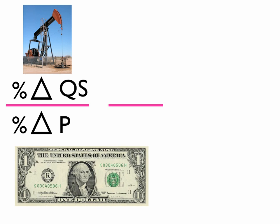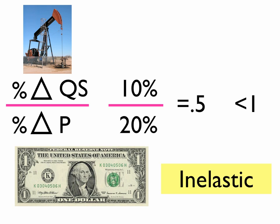So, let's look at a couple of examples. The first one, let's assume that the price of oil increases by, say, 20%, and we note that the quantity supplied increases by only 10%. That fraction reduces to 0.5. We compare that to our benchmark of 1, and we discover that it's less than 1. If it's less than 1, that product is considered inelastic.